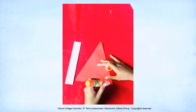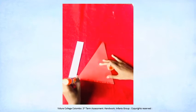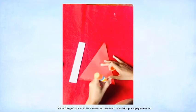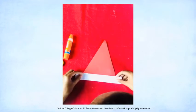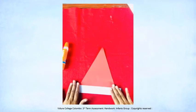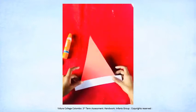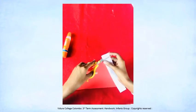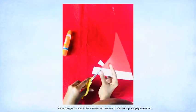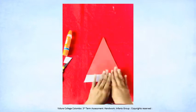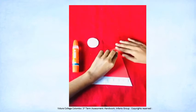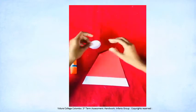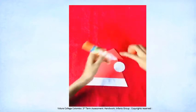Now we are going to make the hat. Paste the white strip on the triangle like this. Fold the top corner of the triangle like this and paste the white circle on the pointed corner of the triangle.